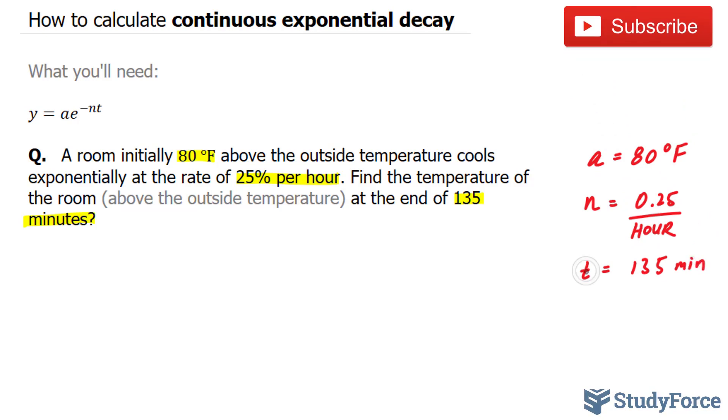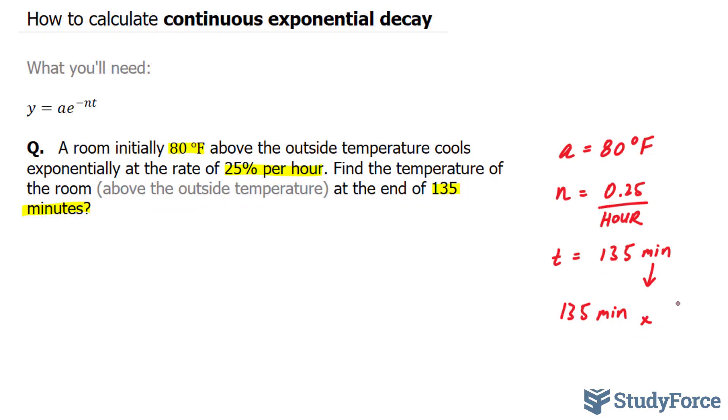Now, since the time does not agree in terms of its units with its rate, you have to change minutes to the rate unit, and that's in terms of hours. So 135 minutes to hours, you use the conversion ratio, obviously 60 minutes per every hour, or one hour per every 60 minutes.